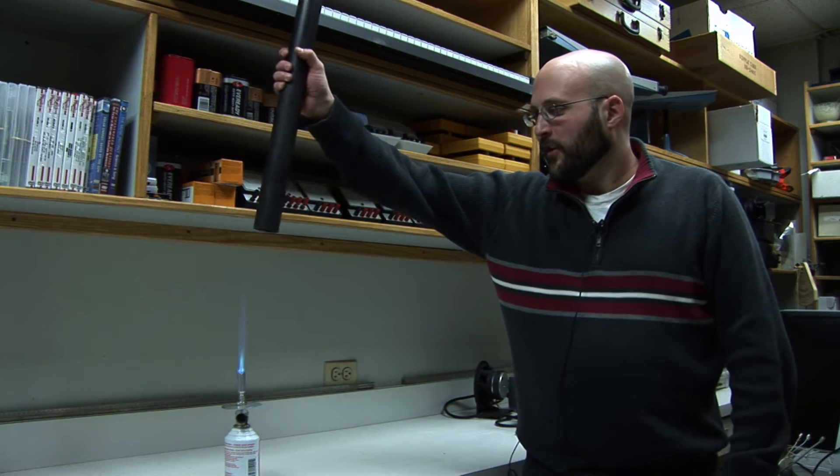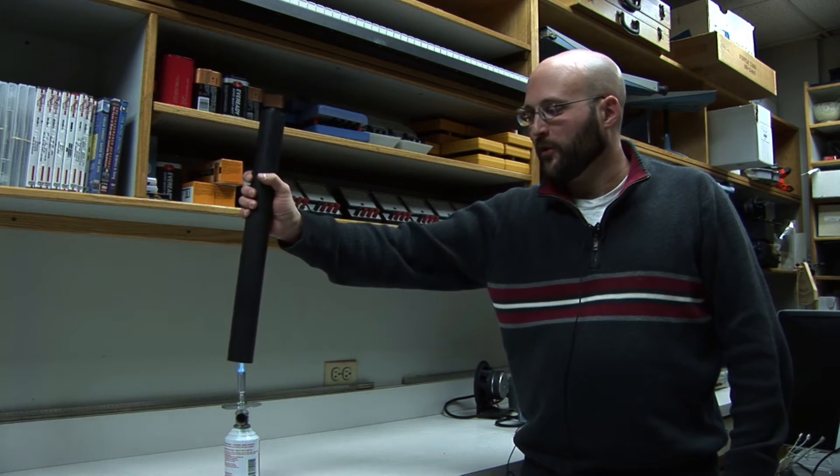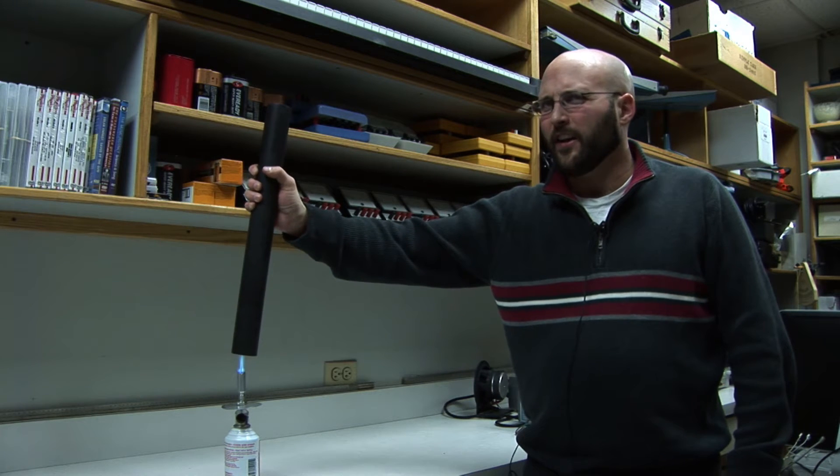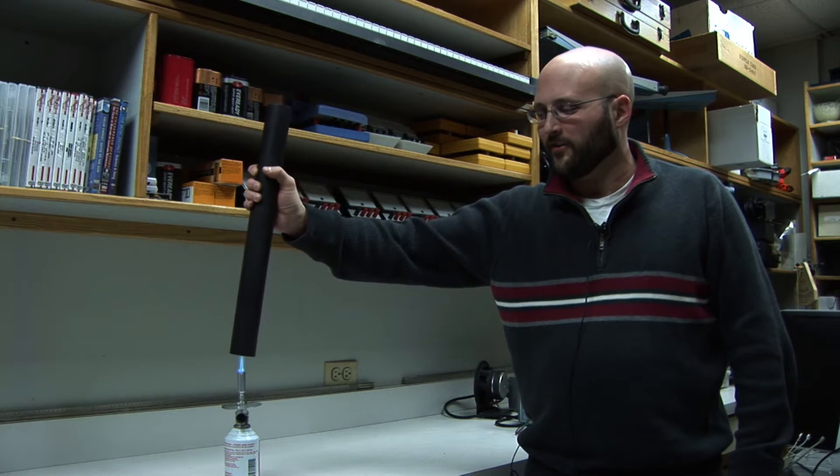All right, so in another video I demonstrated some of the properties of the Rijke tube. And as a reminder, the way that works is if you put it over a flame, this is very heavy metal so my hand isn't getting hot.